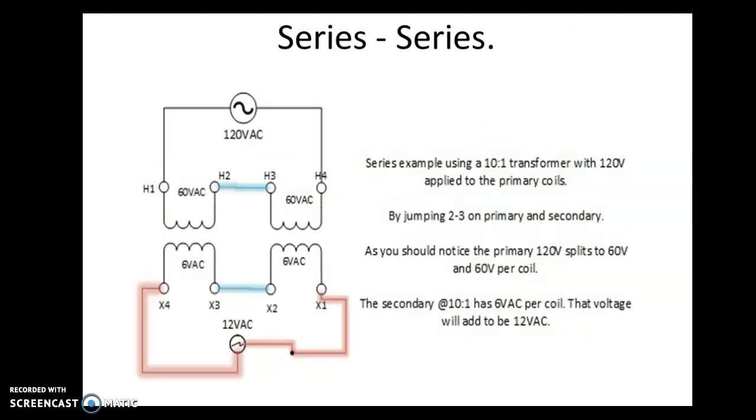On the primary side here, we see 120 volts AC applied to H1 and H4. The jumper is between 2 and 3. Given this transformer is a 10 to 1 ratio transformer, we should see 120 volts coming in with the same exact connection on the other side. We should see 12 volts coming out. That's our 10 to 1 ratio.